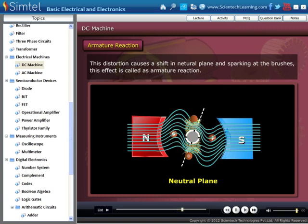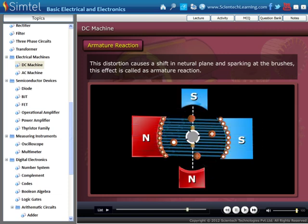There are two ways to maintain the neutral plane in its correct position. First by adjusting the brush position. The other way is by adding interpoles to the field. These interpoles are small magnets placed between the main magnets.